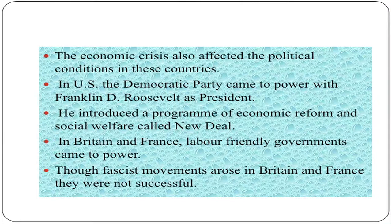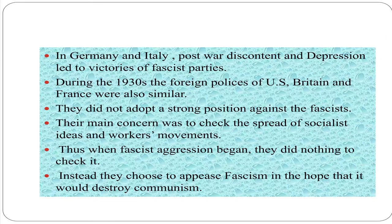The economic crisis also affected the political conditions in these countries. In the United States, the Democratic Party came to power with Franklin Roosevelt as president. He introduced a program of economic reforms and social welfare called the New Deal. In Britain and France, labor-friendly governments came to power. Though fascist movements arose in Britain and France, they were not successful. In Germany and Italy, post-war discontent and depression led to victories of fascist parties. During the 1930s, the foreign policies of the United States, Britain and France were also similar — they did not adopt a strong position against the fascists. Their main concern was to check the spread of socialist ideas and workers' movements. Thus, when fascist aggression began, they did nothing to check it. Instead, they chose to appease fascism in the hope that it would destroy communism.